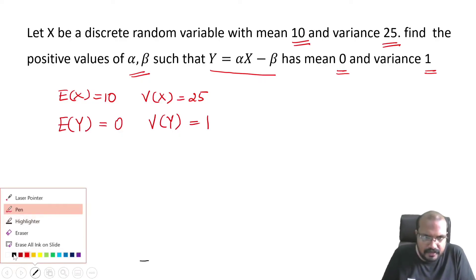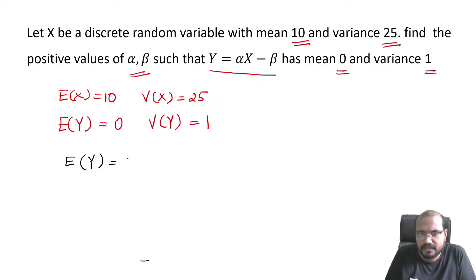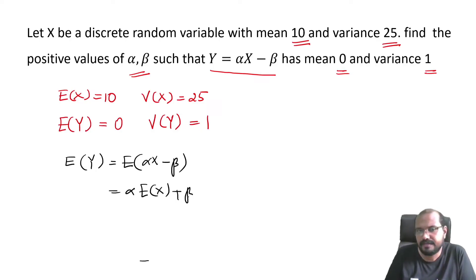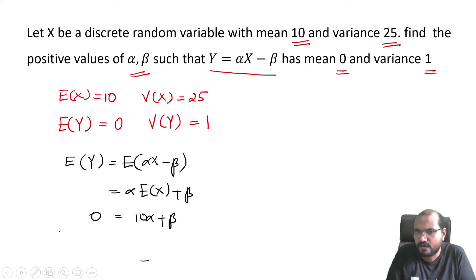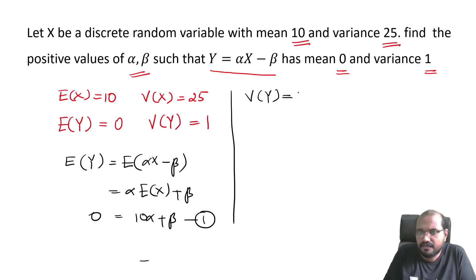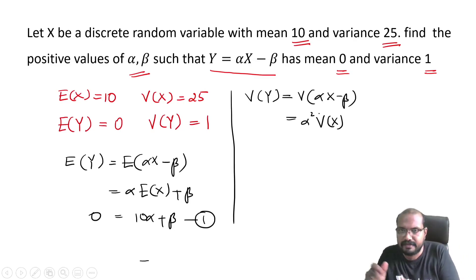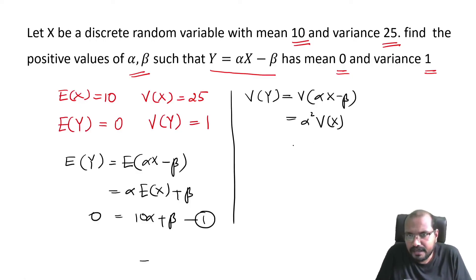We use the expectation formula: E[y] = E[alpha x minus beta] = alpha times E[x] minus beta. That equals 10 alpha minus beta. Setting the mean of y equal to 0, we get 10 alpha minus beta equals 0, which we take as equation number 1.